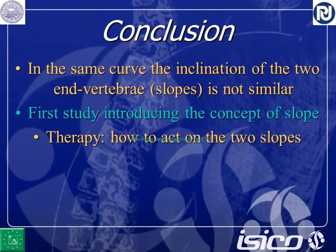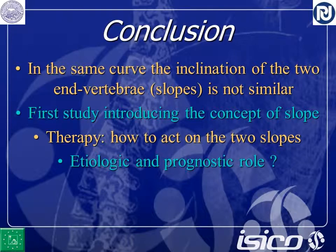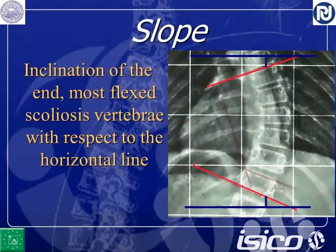In conclusion, within the same curve the inclination of the two end vertebrae is not similar — this is the first time introducing the concept of slopes. Regarding how to act on the two slopes: for us in conservative treatment it is crucial to focus on the most inclined vertebra and to work mainly on that. This concept comes from conservative treatment because during conservative treatment we need to focus on that. Whether there is any etiologic or prognostic role of this concept of slope, we do not know, and we should investigate this concept further.